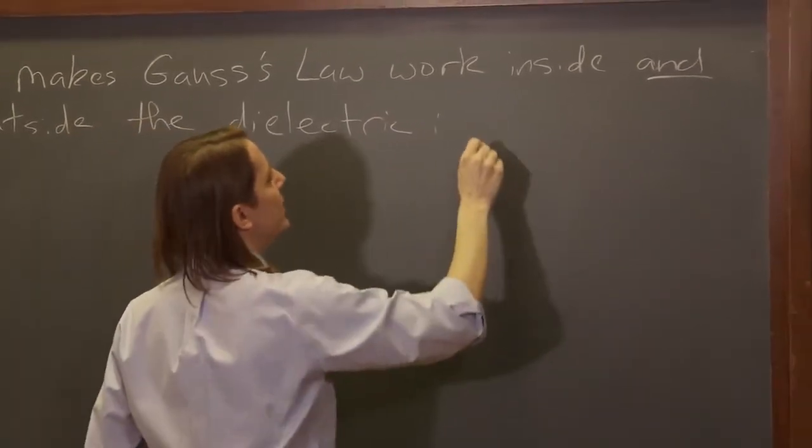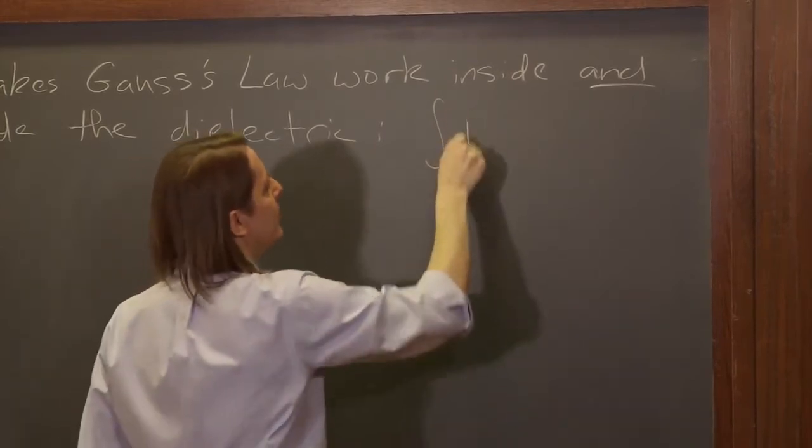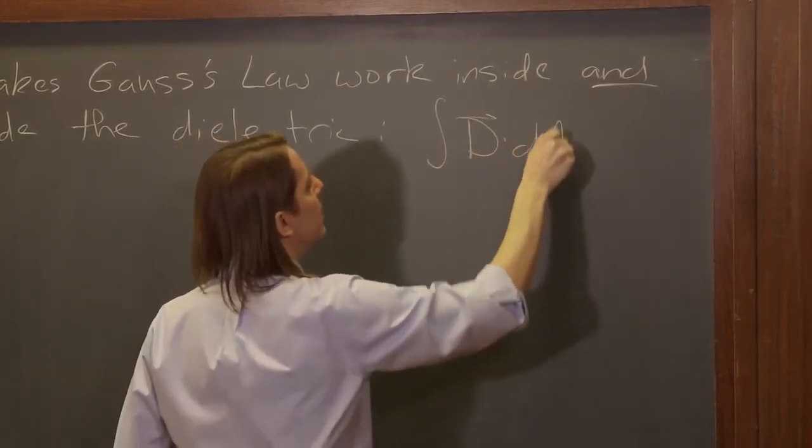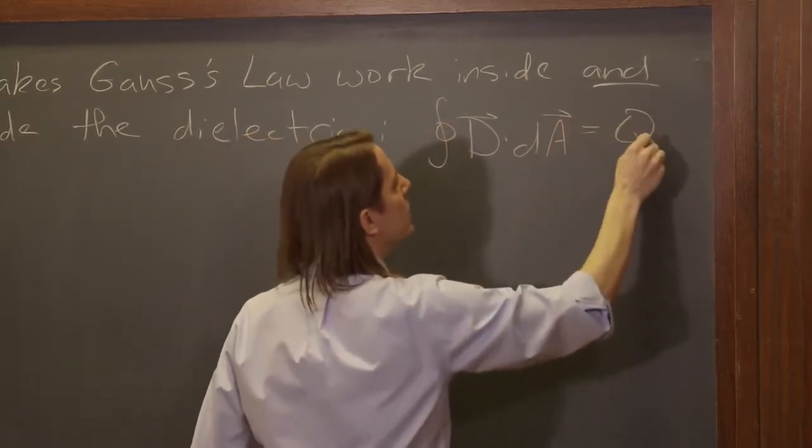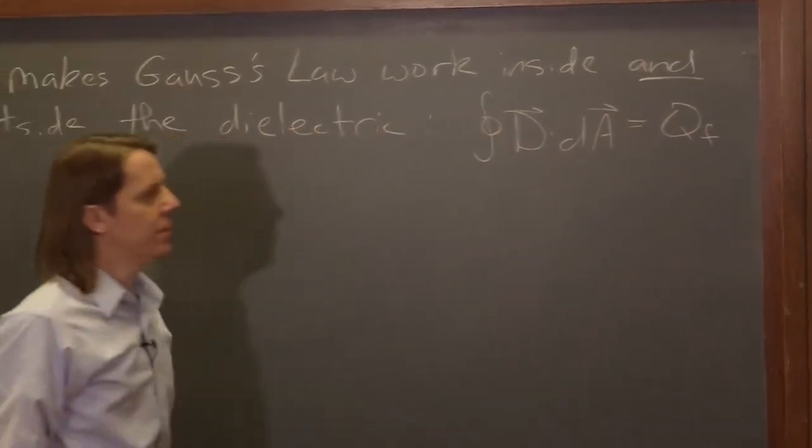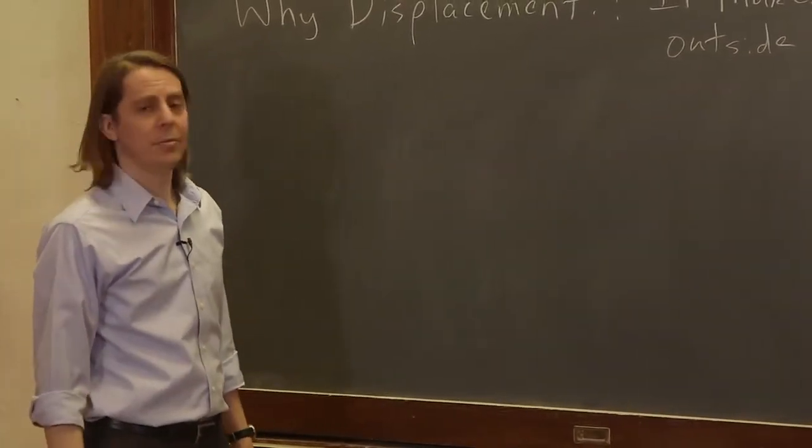Because what is it? It's the integral - and that was epsilon dot E plus P, well that's basically D. The integral of D dot dA around a closed surface equals the free charge that's causing everything to happen. That's getting pretty simple.